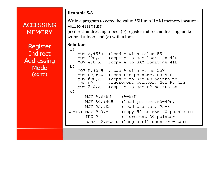Now let us see some examples. The question is: write a program to copy the value 55H into RAM memory locations 40H and 41H. We already studied direct addressing mode. Now let us see how to do this using direct addressing mode and register indirect addressing mode.